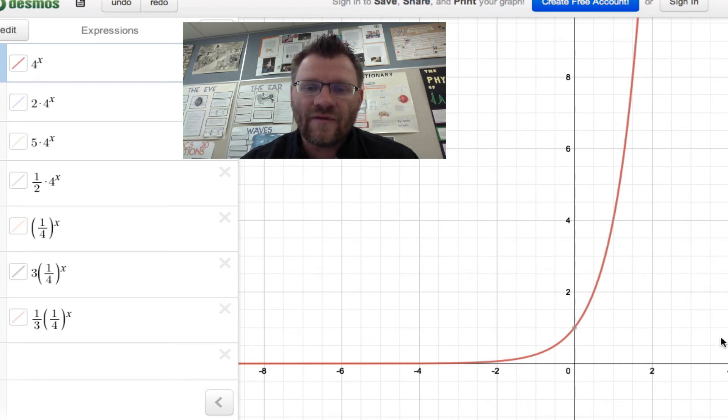The domain, it's everything from left to right because this function keeps on going. So that would be x∈R. And in terms of the range, we've got everything greater than the x-axis. So that would just be y is greater than 0, not equal to 0, but just y is greater than 0. It starts in quadrant 2, and it ends in quadrant 1.